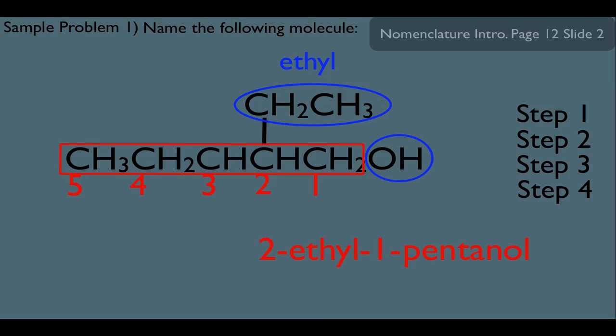Again, that's telling us we have a pent-5 carbon chain. It's an alcohol. And the alcohol is on carbon-1. And also on carbon-2, we happen to have an ethyl.